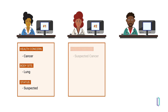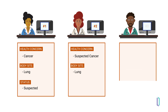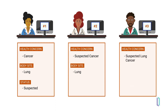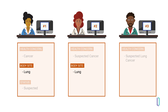Another system may have a health concern of its own called suspected cancer, leaving the body site of lung to be documented separately. And yet another system may have suspected lung cancer as a standalone entry for the clinician to select as a health concern. In the end, the data storage across the three systems in this example would have only one element in common: the body site of lung on systems one and two. Beyond that, there is no way for these systems to determine, given the way this data is entered, that the entries all mean the same thing.